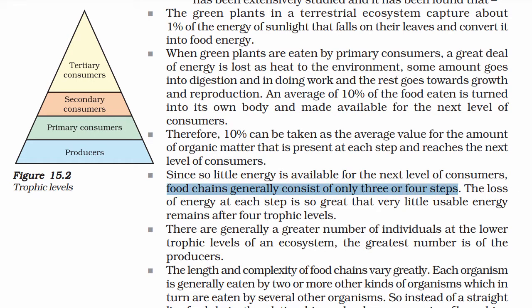Because so little energy is available for the next level of consumers, food chains generally consist of only 3 to 4 steps. 90% of energy is lost at each level. The loss of energy at each step is so great that very little usable energy remains after 4 trophic levels, giving us only 2 to 4 levels.